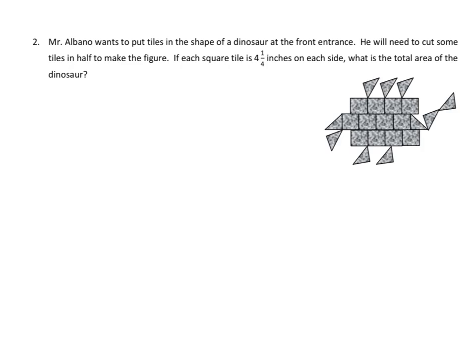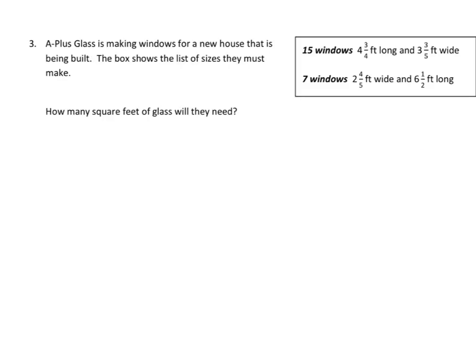Okay, the homework one here is very similar. We have Mr. Albano this time. He's making the shape of a dinosaur at the front entrance. He will need to cut some tiles in half to make the figure. If each square tile is 4 and 1⁄4 on each side, what is the total area? So, once again, we need to find out how many half tiles we have here. And each half tile makes one whole tile. Then we have to add the number of whole tiles that we put together from the halves and add them to the whole tiles. Once we find that sum, we are going to find the area of each tile. And just like we did in the previous one, we had 2 1⁄2 on the practice set. We have 4 and 1⁄4 here. So, once we find that area, we're going to multiply it by the number of whole tiles that we have.